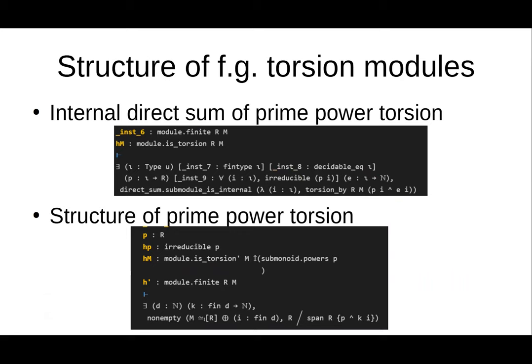There are two parts. First, we show that M has an internal direct sum decomposition into its torsion-by-prime-power submodules. These are the submodules of elements generated by each prime power component. Once we have this, all we need to do is show each of those summands is isomorphic to a direct sum of quotients by prime power spans.